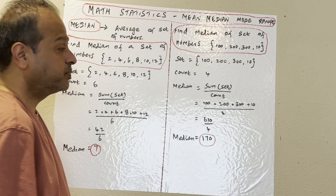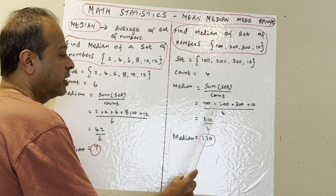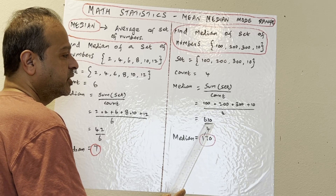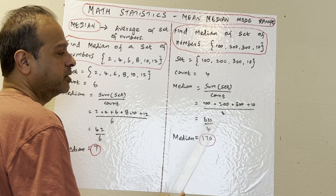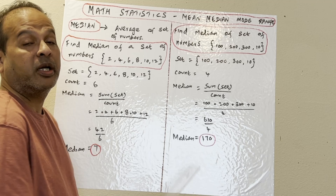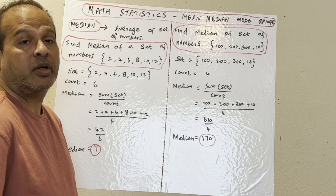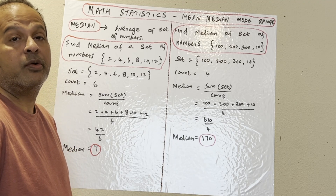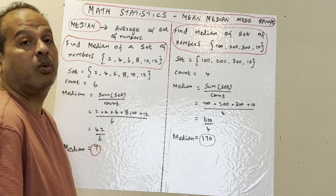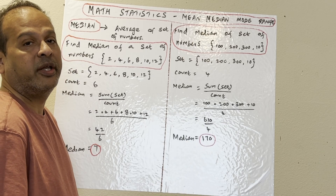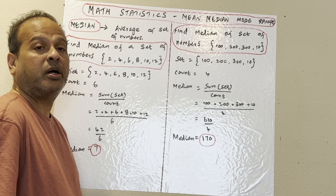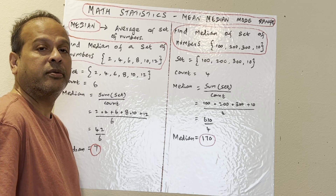We add up all the numbers: 100 plus 200 plus 300 plus 10 is 610, divided by the number of numbers, which is 4. So the mean equals 170. I will continue on the next part, thank you.